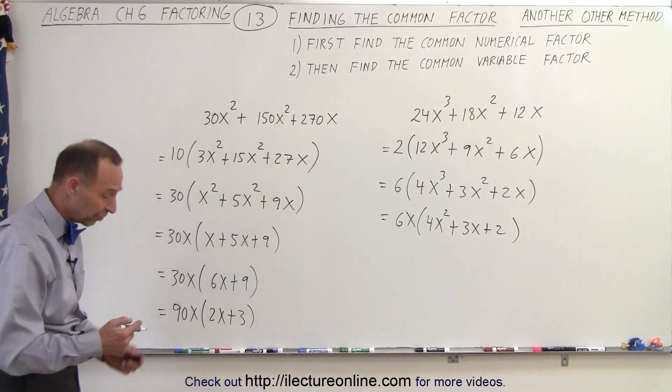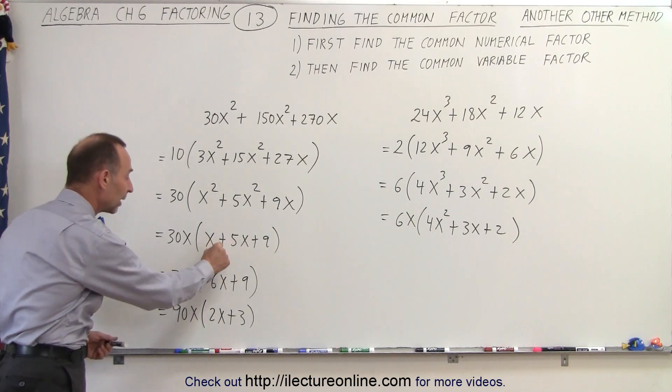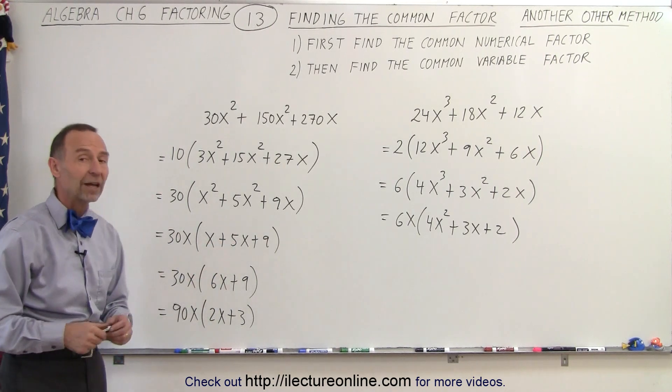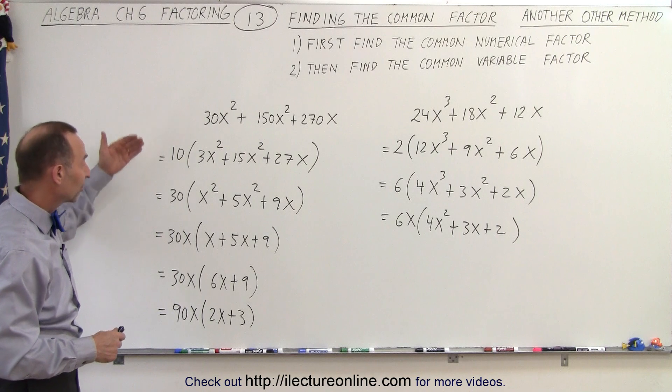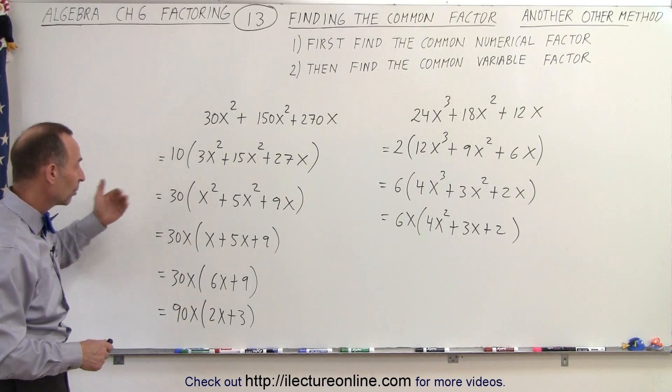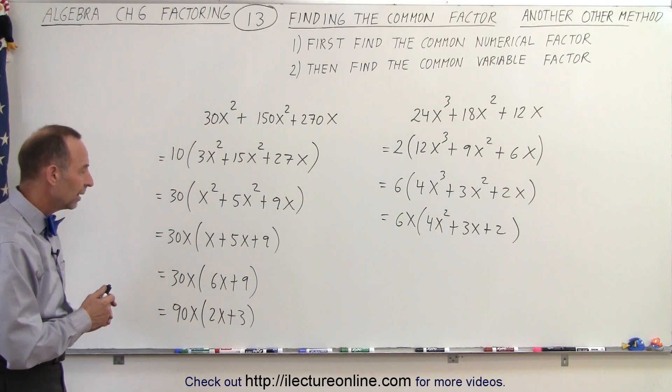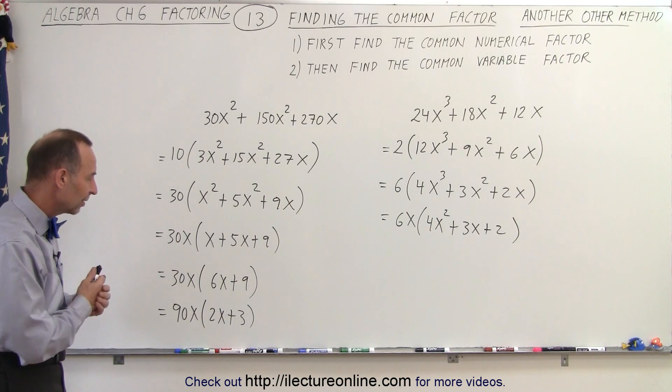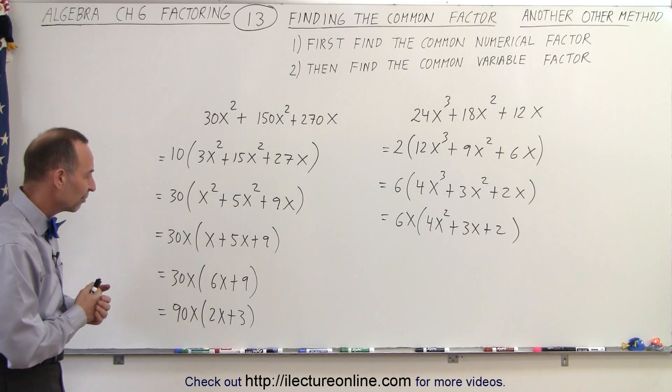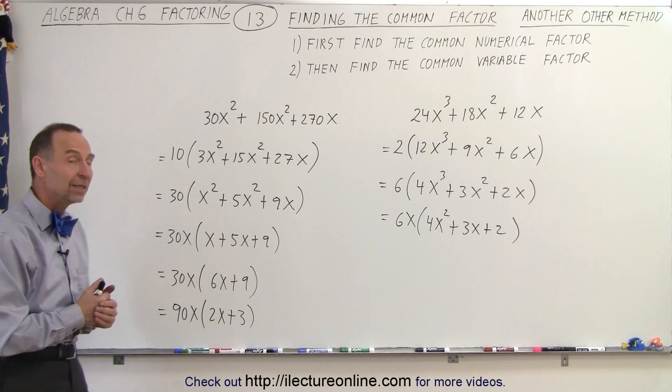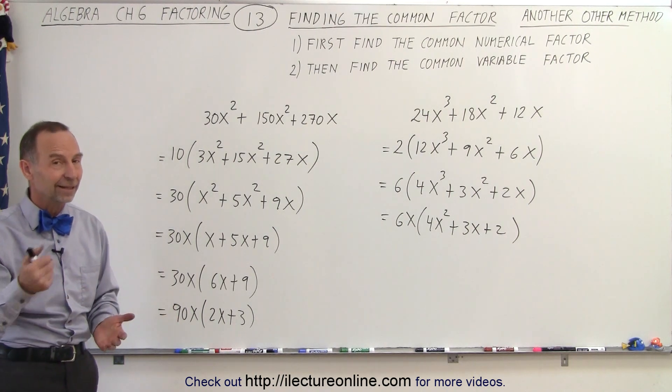So we take it one more step further, realizing when I combine like terms, there's another common factor I can pull out. You can see that systematic approach where you take one number or one variable at a time, then you simplify it, you can realize there's another common factor you can pull out, and that would be the final answer. That is how it's done.